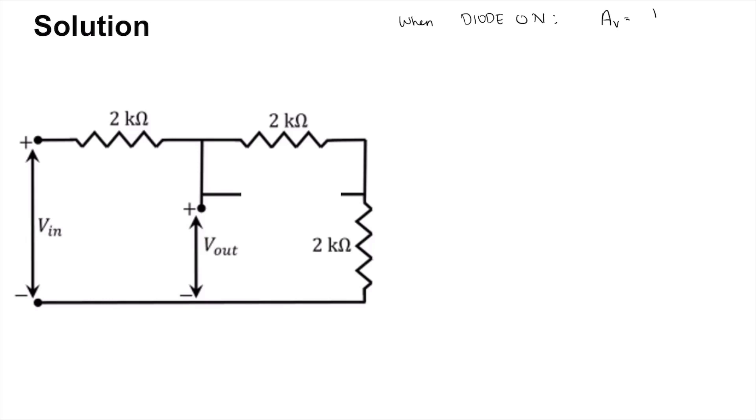And when the diode is off the analysis will be simply to keep this as an open circuit. Well then it is just a simple resistor divider and what we will get is Vout is equal to...